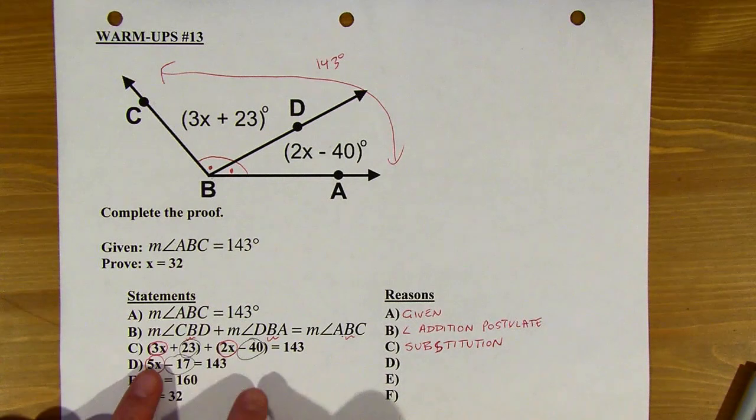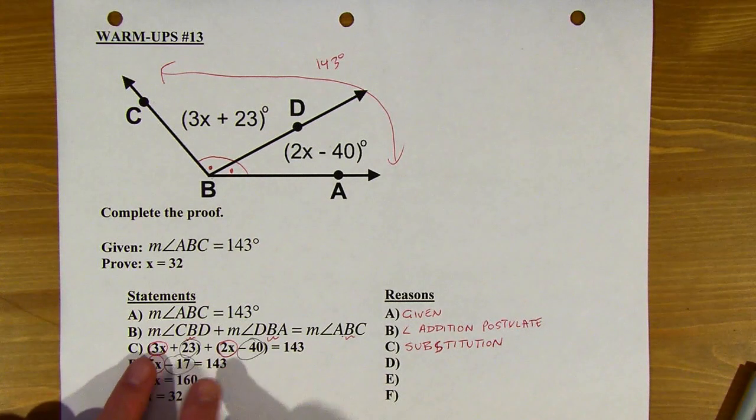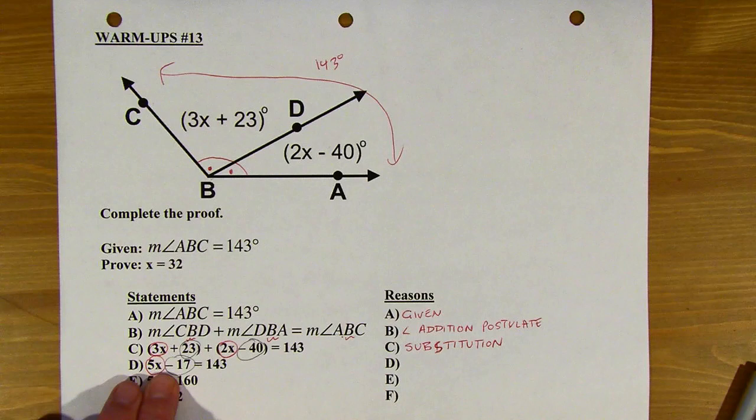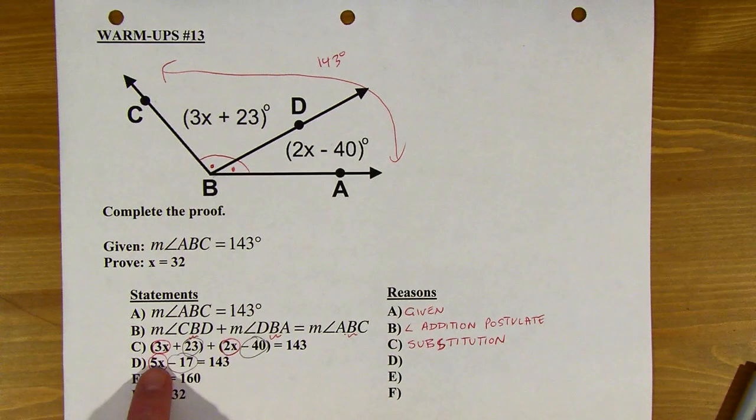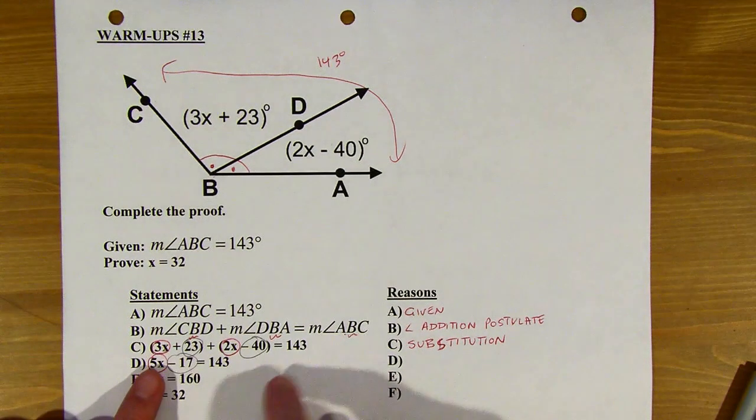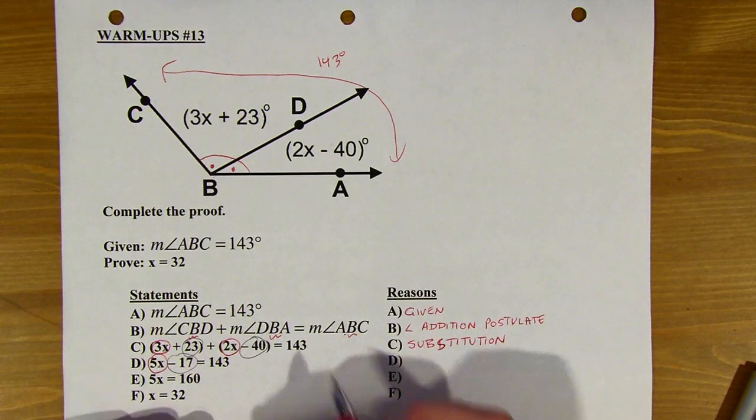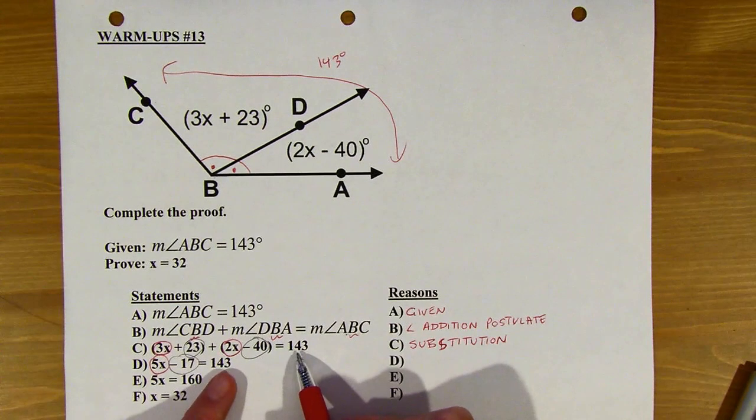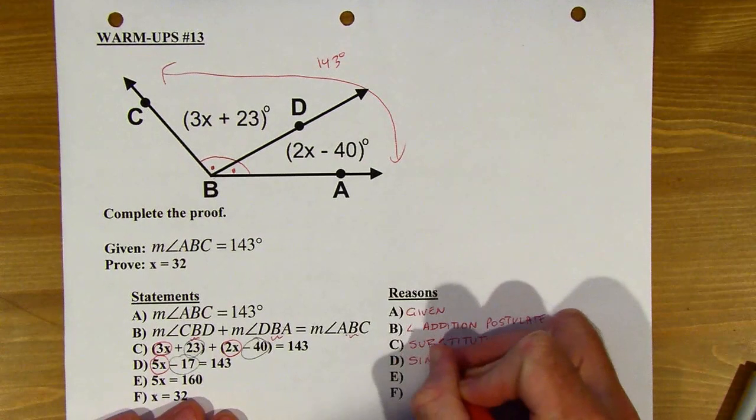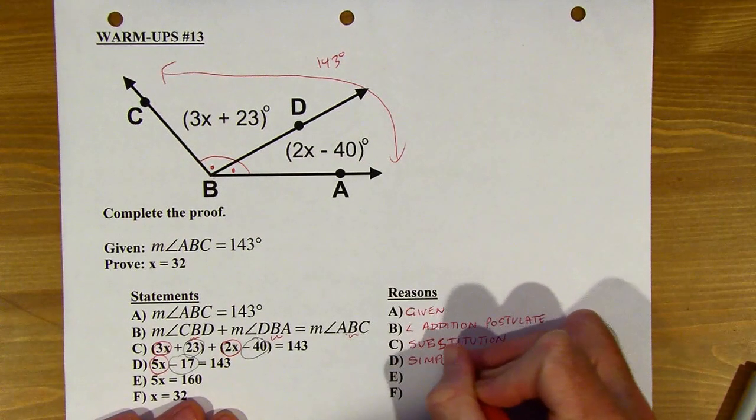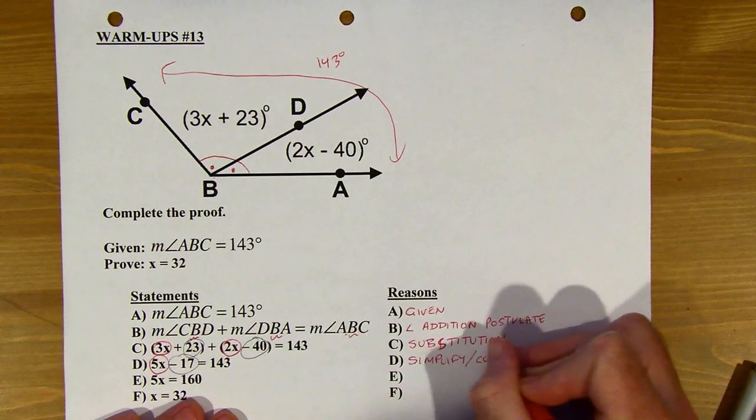So you can write it like that. You could also say simplify. Some people will say addition property of equality, but that's incorrect. I know you're adding these two things together, but addition property is when you're adding the same thing to both sides of the equation. Nothing's happening on the right side of the equation here, okay? So this has to be either simplify or combine like terms. Either one of those is fine.